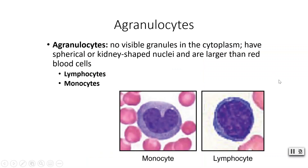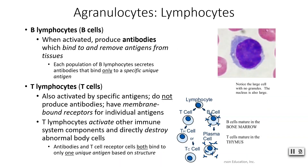Our second category, agranulocytes, has two options: lymphocytes and monocytes. They have no visible granules in the cytoplasm and are fairly easy to identify visually. Lymphocytes come in two varieties. We aren't really able to visually distinguish a B lymphocyte from a T lymphocyte, so visually a lymphocyte is just a lymphocyte. They are pretty easy to spot — it is basically just one giant nucleus with no visible granules.